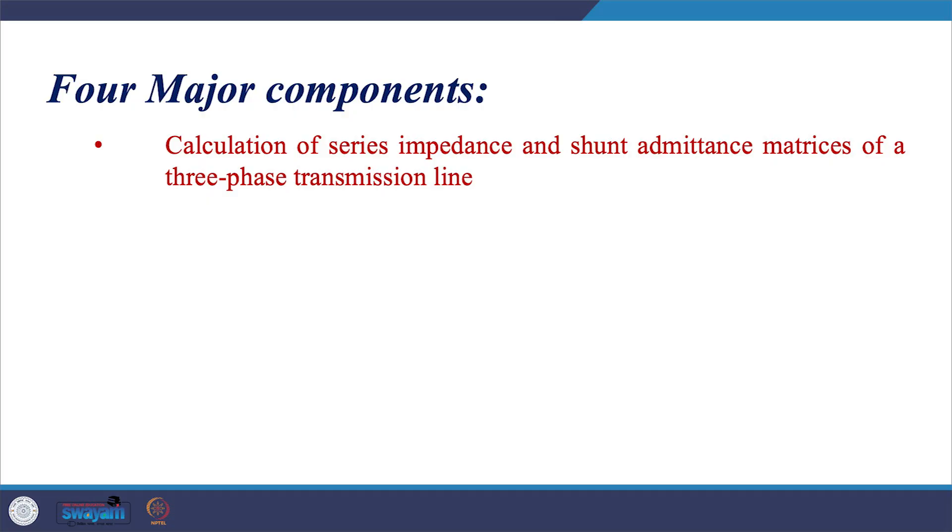We do welcome you to this course. This course has got four major components. The first component is the calculation of series impedance as well as the shunt admittance matrix of a three-phase transmission line. Please note, although here we would be talking about the calculation of the impedance and shunt admittance matrix of a three-phase transmission line, this basic technique is also equally applicable for any three-phase unbalanced distribution system.